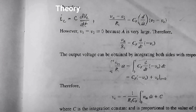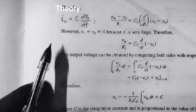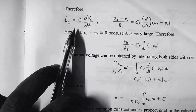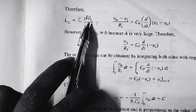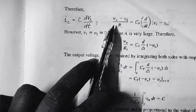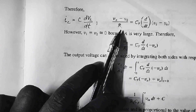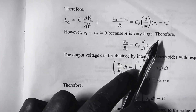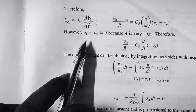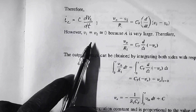Next we can have a brief discussion on the theory of the integrator. From the circuit, the current through the capacitor is equal to C into d/dt of the voltage across the capacitor. Then at the node V2, we have: V_input minus V2 divided by R1 is equal to the feedback current CF into d/dt of V2 minus V_output. We know that terminal V2 is virtually grounded and the op-amp is ideal.